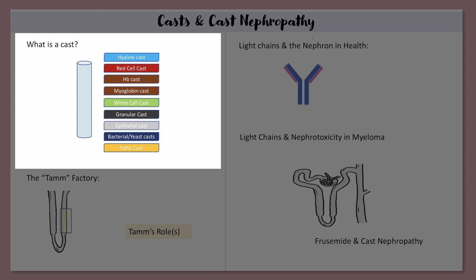There are different types of casts which I'll discuss shortly, but all of these casts have one thing in common and that thing is Tamm-Horsfall protein, otherwise known as Uromodulin. I'll be referring to Tamm-Horsfall protein as just Tam.